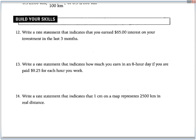Let's take a look at these questions. Write a rate statement that indicates that you earned $65 interest on your investment in the last three months. So it's important that you understand that the rate has to have units and that the slash just means divide. So $65 divided by 3, I got 21.6666666. So whenever you have repeating decimal and you're dealing with money, just round it to two decimals. So it's $21.67 per month after division.